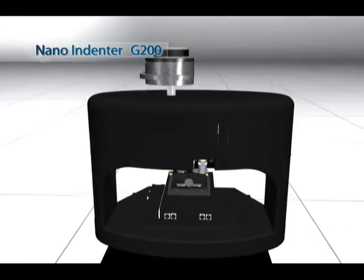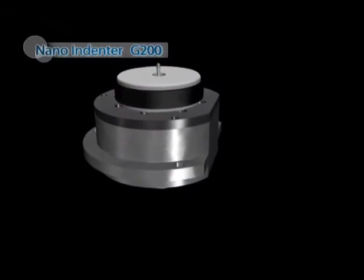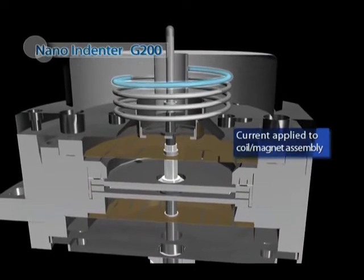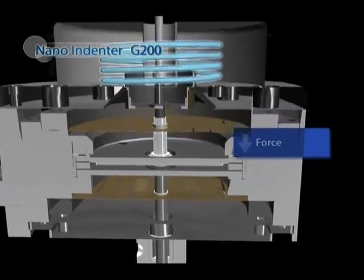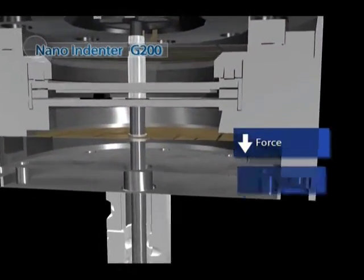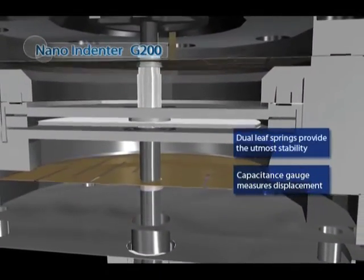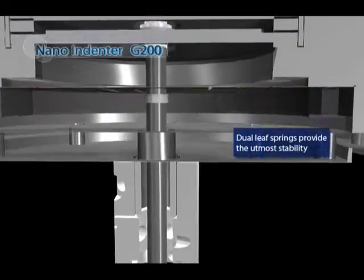The core technology of the nano indenter uses independent means for force application and displacement measurement. Force is generated in the transducer using electromagnetic actuation, and the resulting displacement is measured using a capacitive gauge.